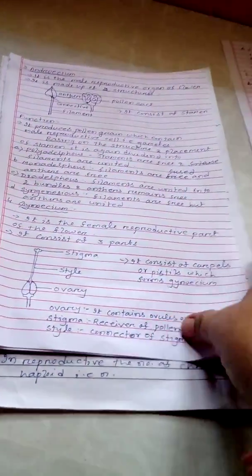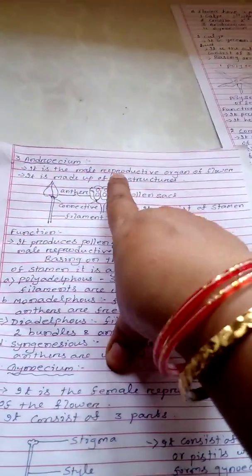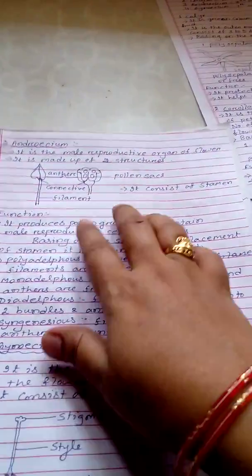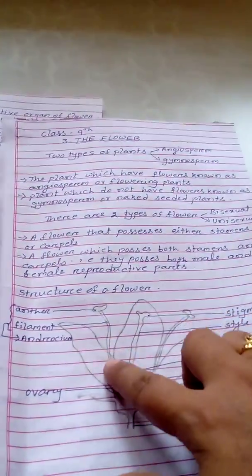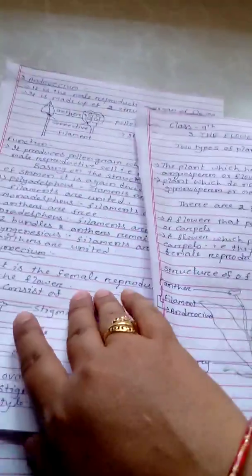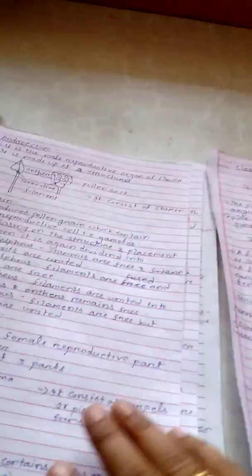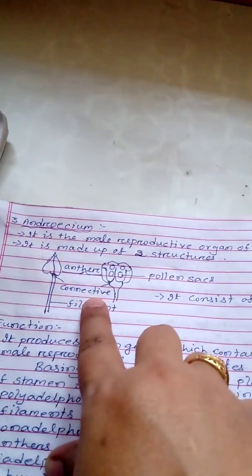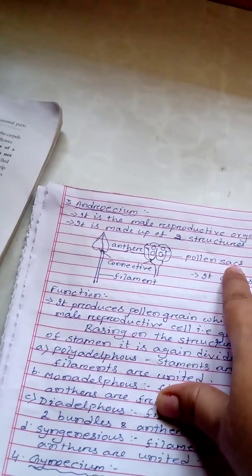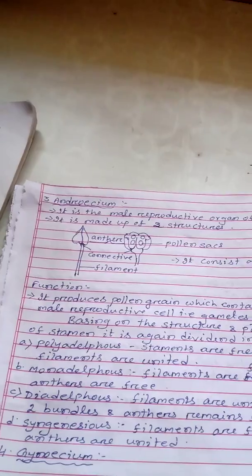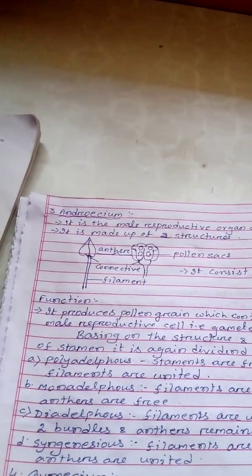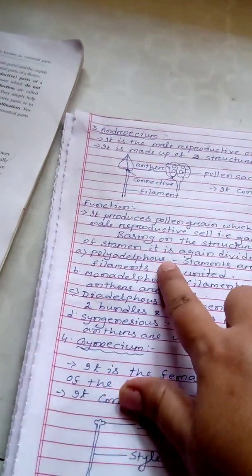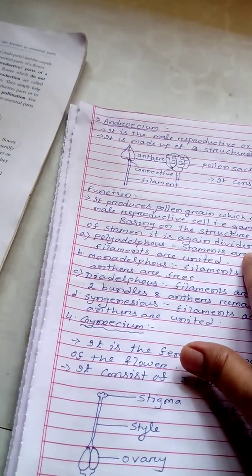Next is the androecium. It is the male reproductive organ of the flower and consists of stamens. Each stamen is made of two structures: anther and filament, and these two are connected by a connective. The anther contains the pollen sacs where pollen grains are produced, which contain the gametes. Based on the structure and placement of the stamen, it is divided into four types.